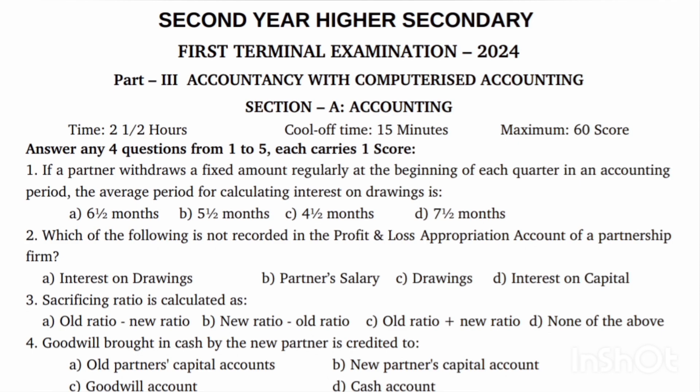The third question: Sacrificing ratio is calculated as old ratio minus new ratio.